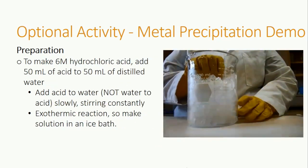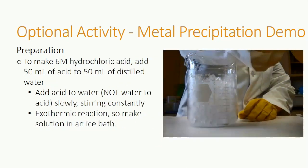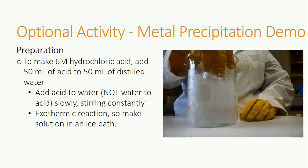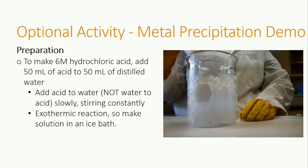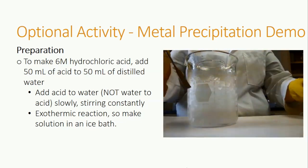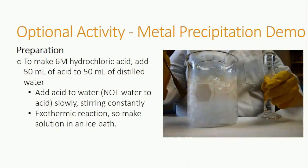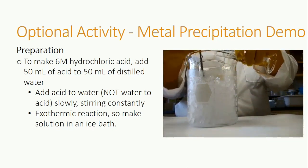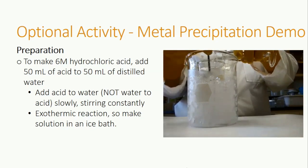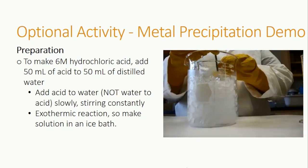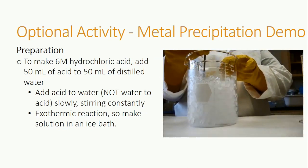Be careful making 6 molar hydrochloric acid. For this molarity, we need to combine 50 milliliters of acid and 50 milliliters of distilled water. This reaction is exothermic, meaning it produces heat, so make the solution in an ice bath as shown. When dealing with acid, always slowly add acid to water and stir constantly. Be careful not to splash liquids, and use glass containers that can withstand the temperature rise of the exothermic reaction.